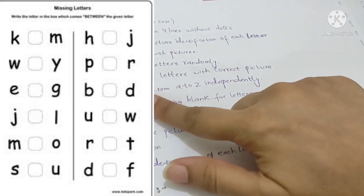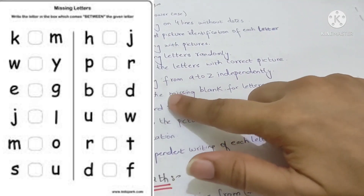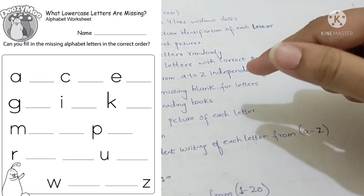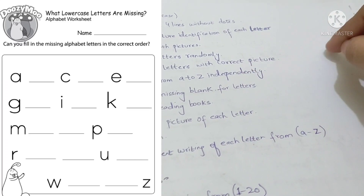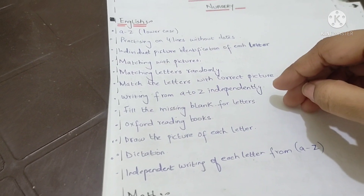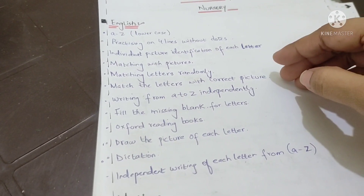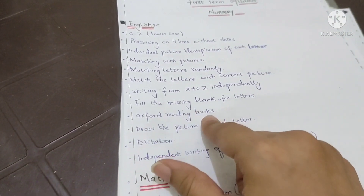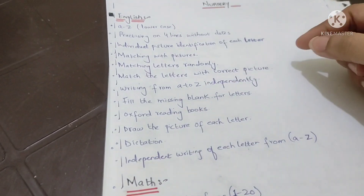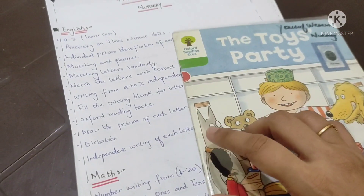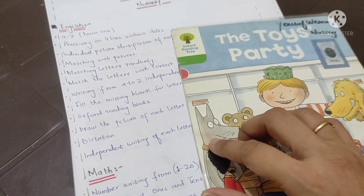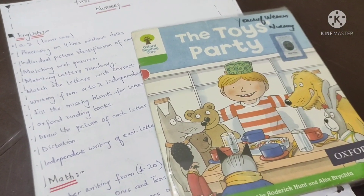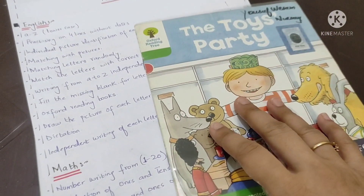The next thing is matching with pictures. On one side they have letters and on the other side are the pictures, and they have to match according to the sound. Always make sure that they are learning or revising the sounds done in their previous class, because it will help them learn words in the future.